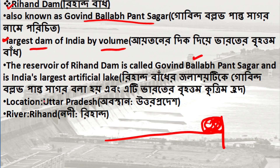So India has its first artificial lake. The location is in Uttar Pradesh.